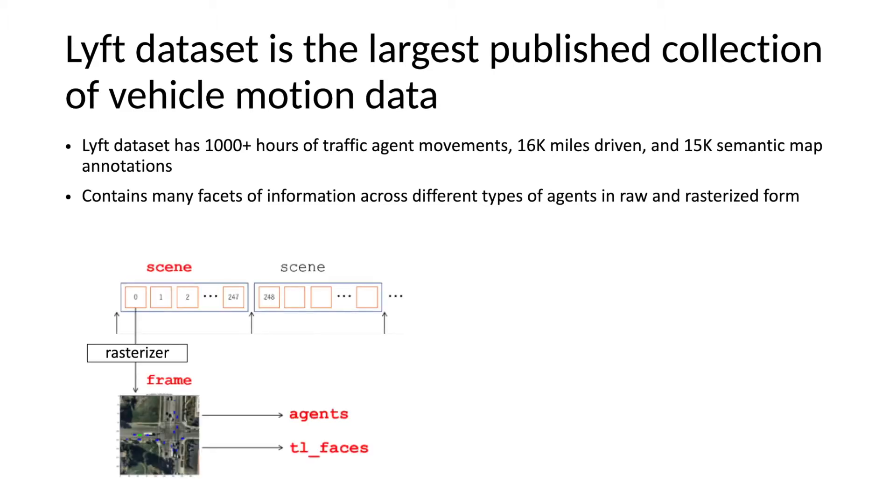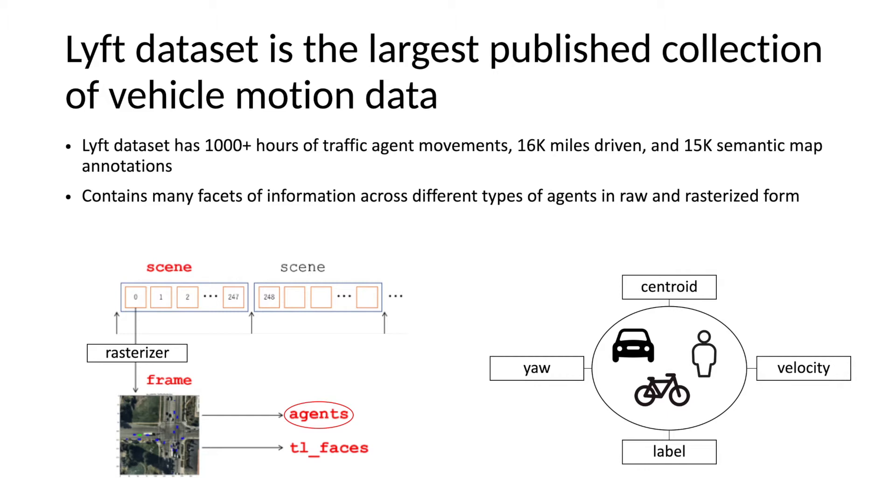If you look below on the left of the slide, we can see that the data has different scenes of time, and for each scene, there are many frames, or you can think of them as snapshots of time. And so within a specific frame, we have information about the agents and vehicles in the scene, as well as traffic light information. This agent information contains things such as the centroid of the agent at that particular point in time, velocity, the yaw, as well as the label, if it's a vehicle, a bike, or a pedestrian. And in addition to this raw, rich information, we can also use a rasterizer and create an image using the information so that we can use the data in image form as well.